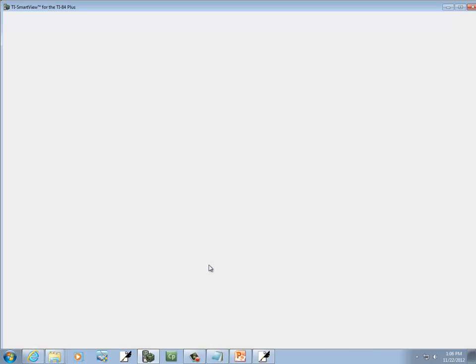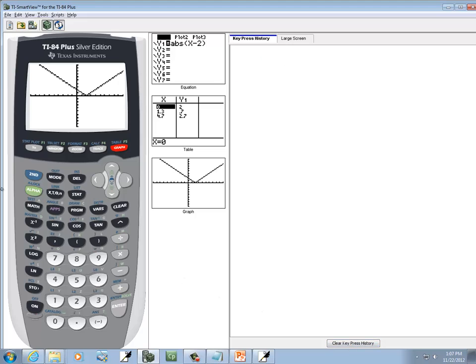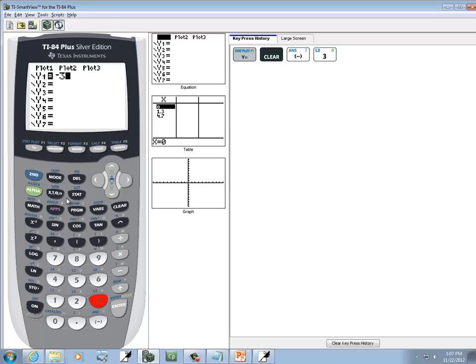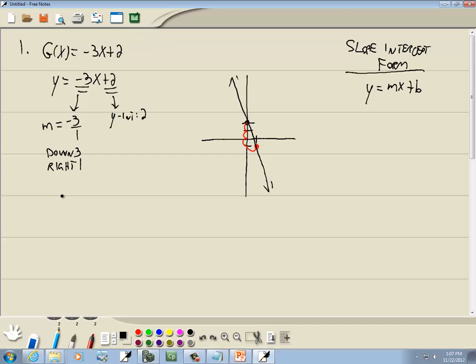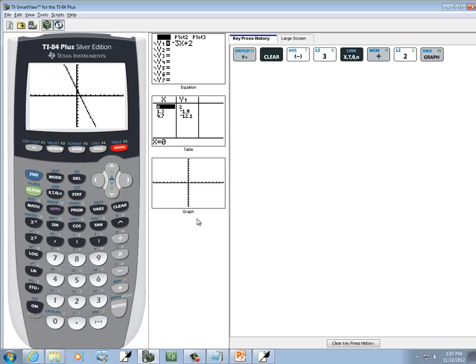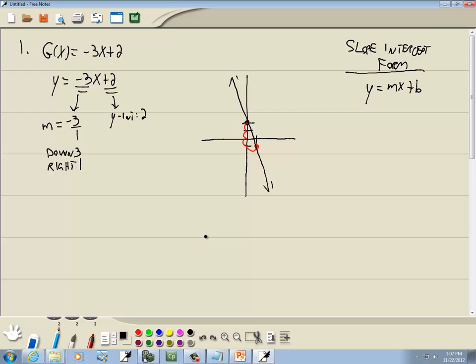Now to graph this on a TI-83, TI-84, I'm going to press my y equals, clear. The dash is at the very beginning of my problem, so it's a negative. So we've got negative 3x and then plus 2. And then graph. And that will give us the same graph as what I got there.